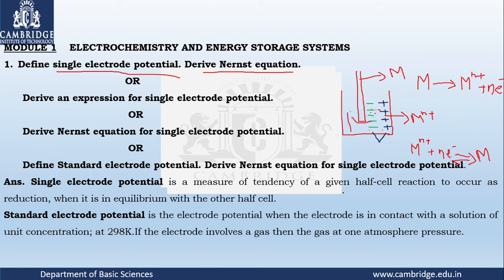It is a measure of tendency of a given half cell to occur as reduction. A half cell can be an oxidation half cell — where the metal undergoes dissolution to release electrons — or a reduction half cell, where metal ions gain electrons and become the metal. At equilibrium, the potential difference available at the junction between the electrode surface and the solution is called the single electrode potential.